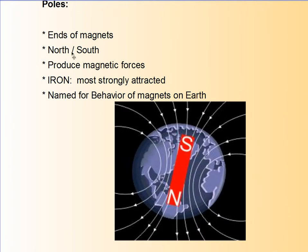Now let's talk about poles. The poles are at the ends of magnets — you've got a north pole and a south pole, and these poles are what produce the magnetic forces. Iron is going to be very strongly attracted to the north and south poles. The poles are named for the behavior of magnets on earth. North attracts south and south attracts north. So when you hang a magnet and the north end points to the north pole of the earth, it's being attracted to a south pole.